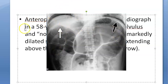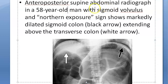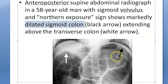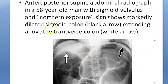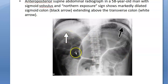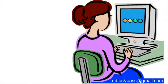Looking at the X-ray explanation: this is an anteroposterior supine abdominal radiograph in a 58-year-old man with sigmoid volvulus. The Northern exposure sign is noted. The dilated sigmoid colon is shown by the black arrow, and this dilation extends above the transverse colon shown by the white arrow. To summarize X-ray findings: omega sign, bent inner tube sign, and bird beak sign on contrast enema.